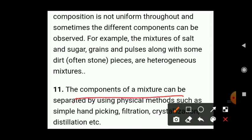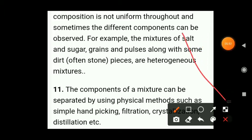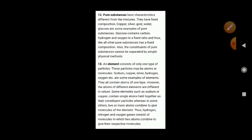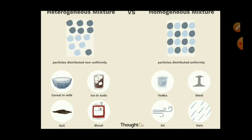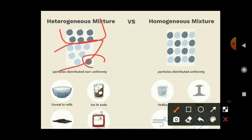The components of a mixture can be separated by physical methods — for example, dyeing, picking, crystallization, distillation, and filtration. In a homogeneous mixture, particles are distributed uniformly, whereas in a heterogeneous mixture, particles are distributed non-uniformly — for example, all grains in one part and rice in another.